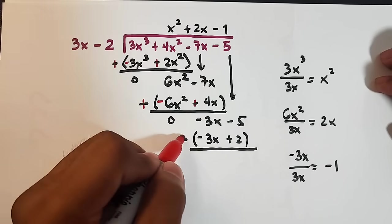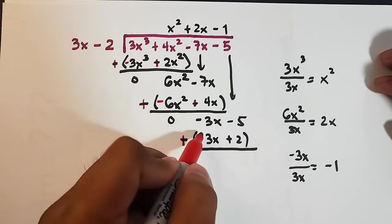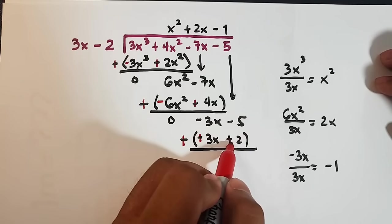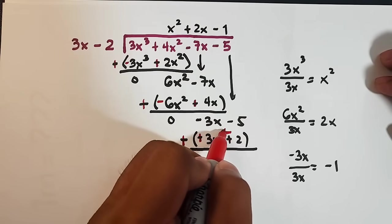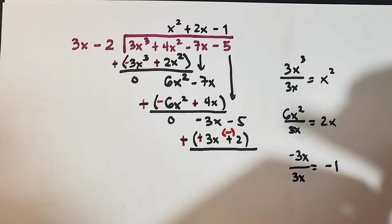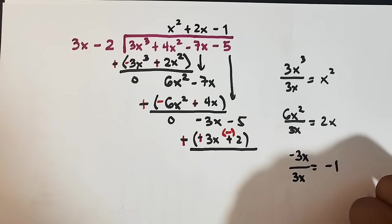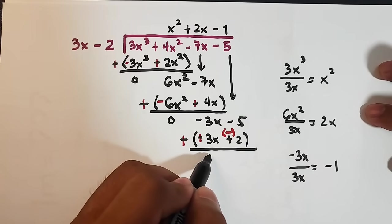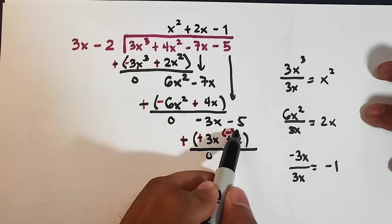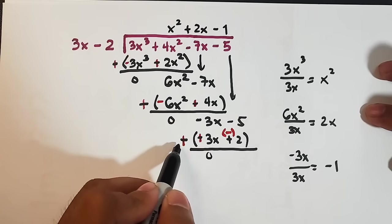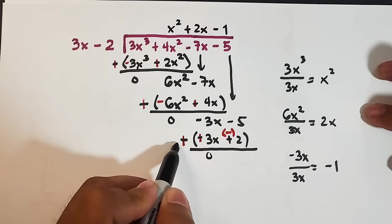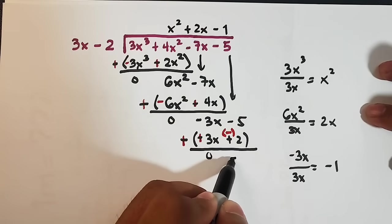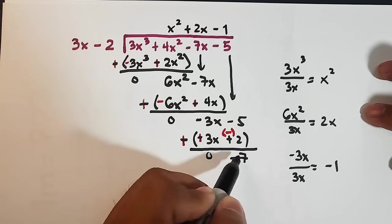Plus. Our negative will become positive. Our positive will become negative. So what will happen is this. Negative 3x plus 3x that is 0. That's 0. Negative 5 plus. Plus. Negative 2. That is negative 7. This will be our remainder.